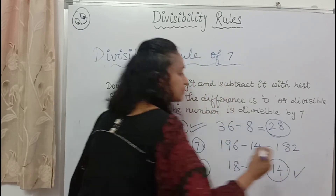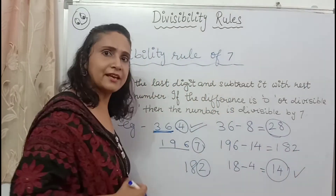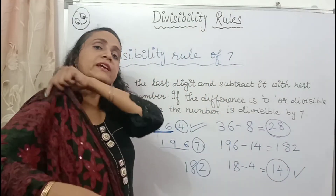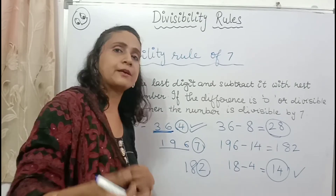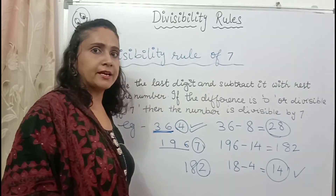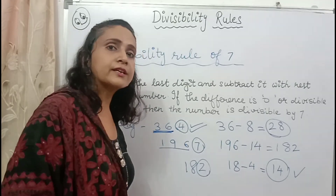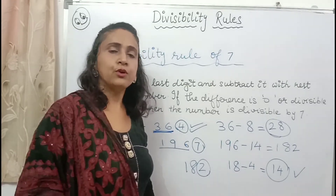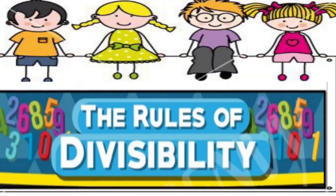14 is divisible by 7, so 1967 is also divisible by 7. We can repeat the step. If a bigger number is there and you don't know what to do, you can repeat the step.